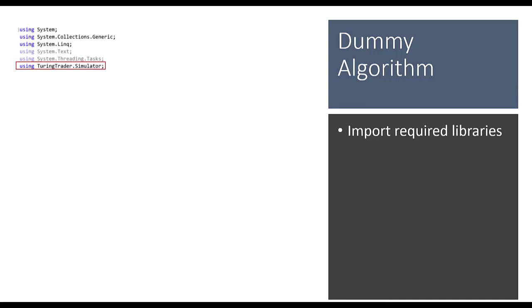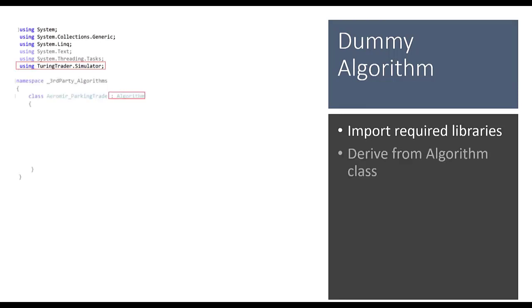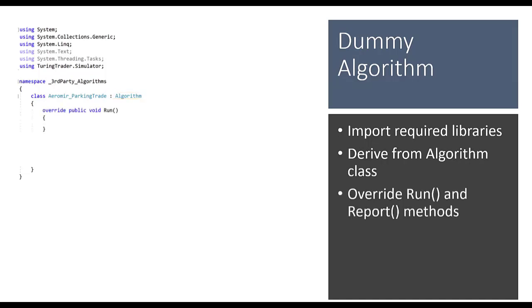Visual Studio will create some code for you. First, import the required libraries — you need to add the library for the TuringTrader simulator so you can use its features. The auto-created dummy class is not derived from the algorithm class, so add a colon and 'Algorithm' there. Then add two methods: the run method, where all strategy logic happens, and the report method, where reports are generated. This is now a valid TuringTrader strategy — it compiles and launches but doesn't do anything yet.